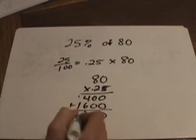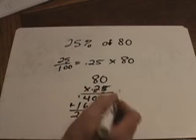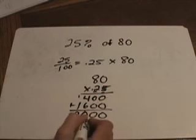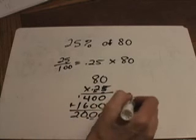And now we're going to add these up. 0, carry. And so we get 2, 0, 0, 0. But we have 2 numbers past the decimal point in the problem, so we need 2 numbers past the decimal point in the answer. So the answer becomes 20 to this.